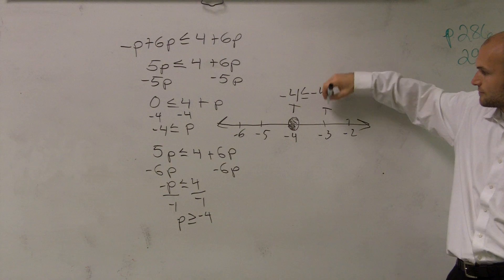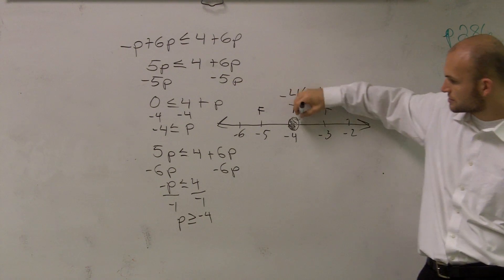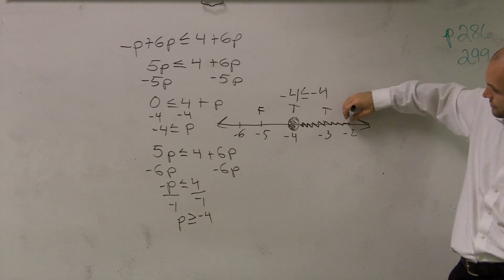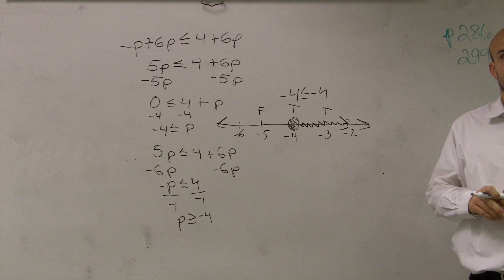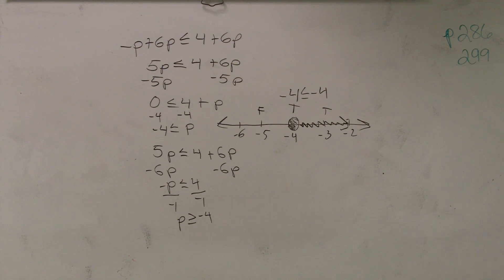So which one is greater than or equal to negative 4? Negative 5 or negative 3? Negative 3. If you could say negative 3, that's true. That's false. So we shade in the area of the true. Done.